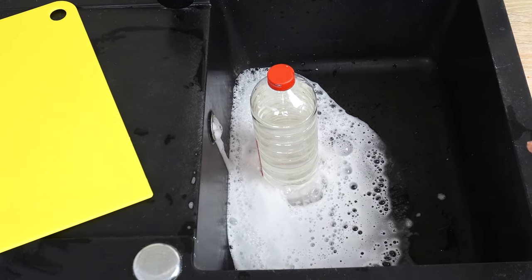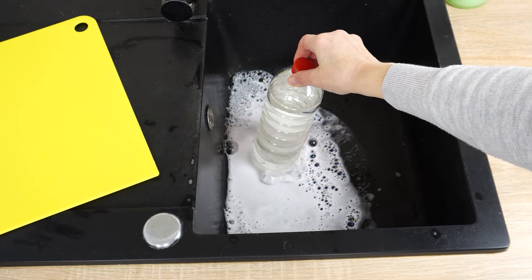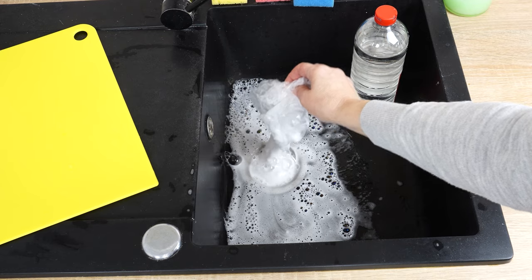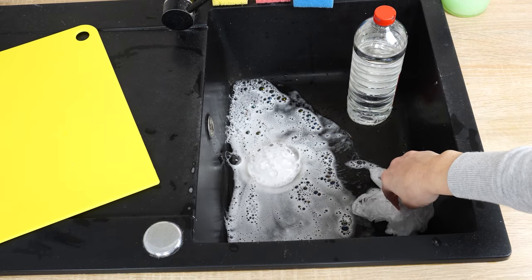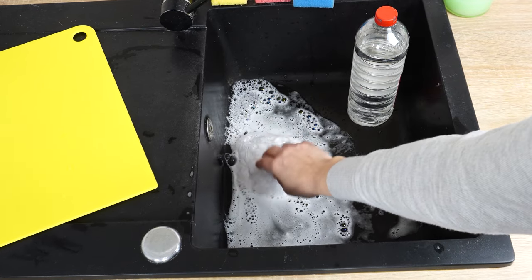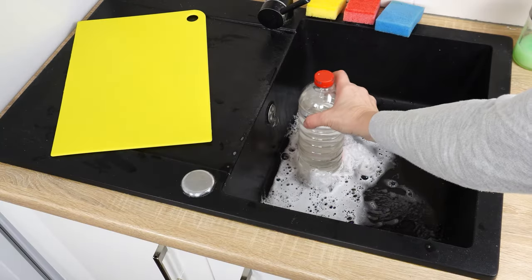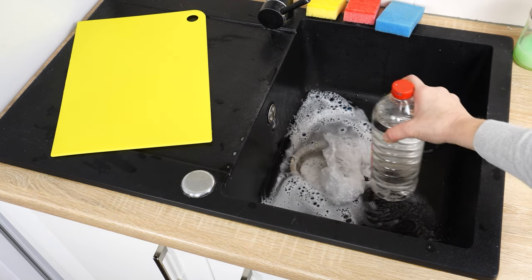When foam stops coming out, unplug the sink and see what happens. If foam starts coming out of the sink again, plug it again for a longer time. Usually, it takes about half an hour for the mixture to clean the sink. Only when everything starts to flow into the sink can you turn on hot water and flush the sink thoroughly.